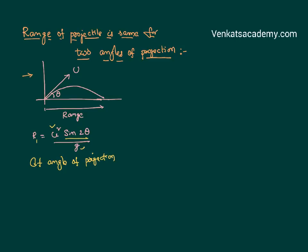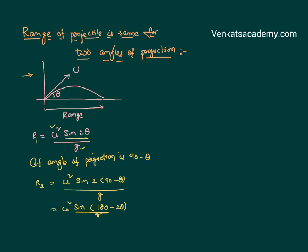Now if the angle of projection is different — say 90 minus theta — then the range of that particular projectile with the same velocity of projection is R2 equals u squared sine 2(90 minus θ) divided by g. Simplifying: u squared sine(180 minus 2θ) divided by g. By trigonometry, sine(180 minus 2θ) equals sine 2θ, which implies R2 equals u squared sine 2θ divided by g.